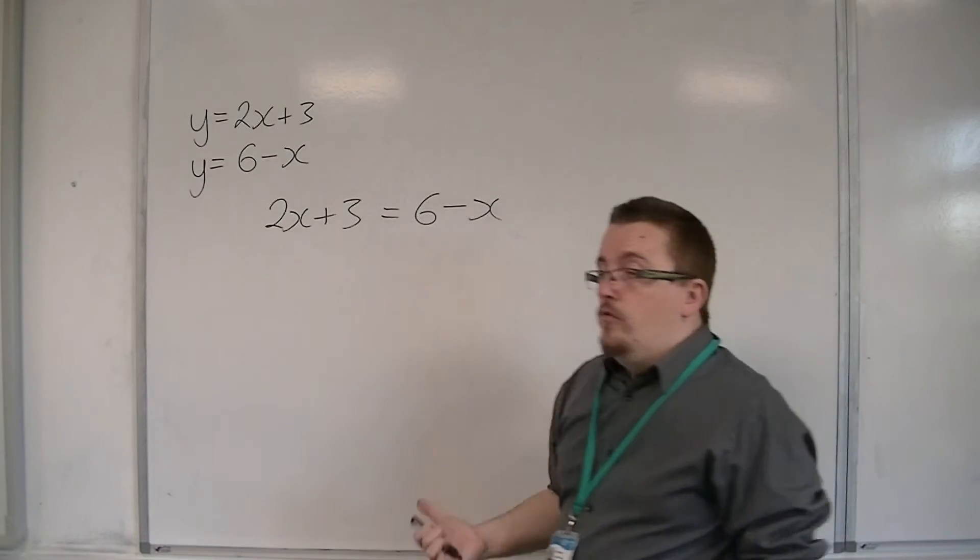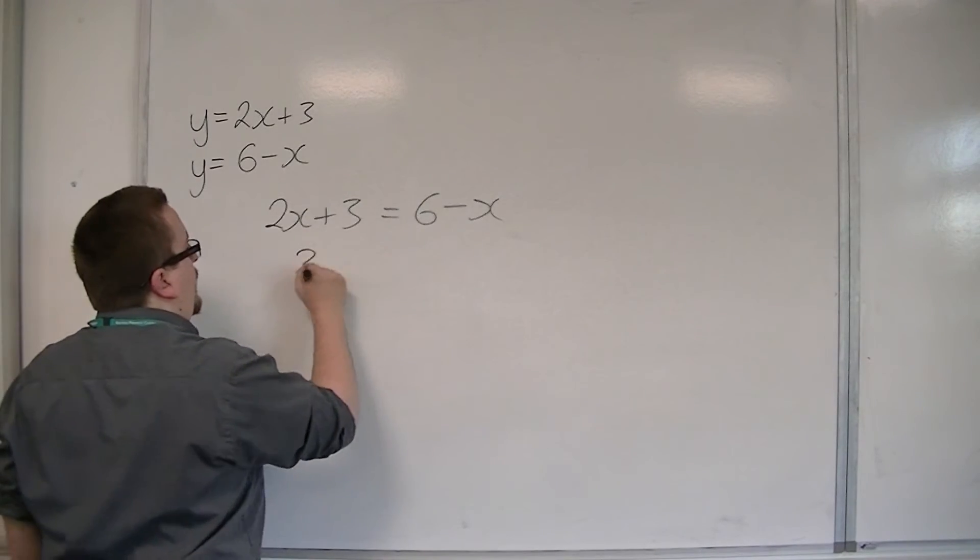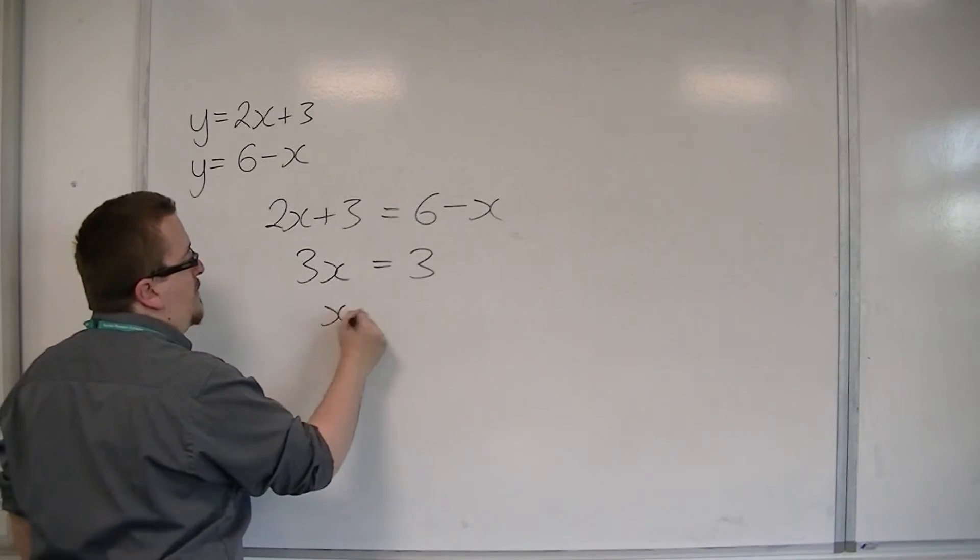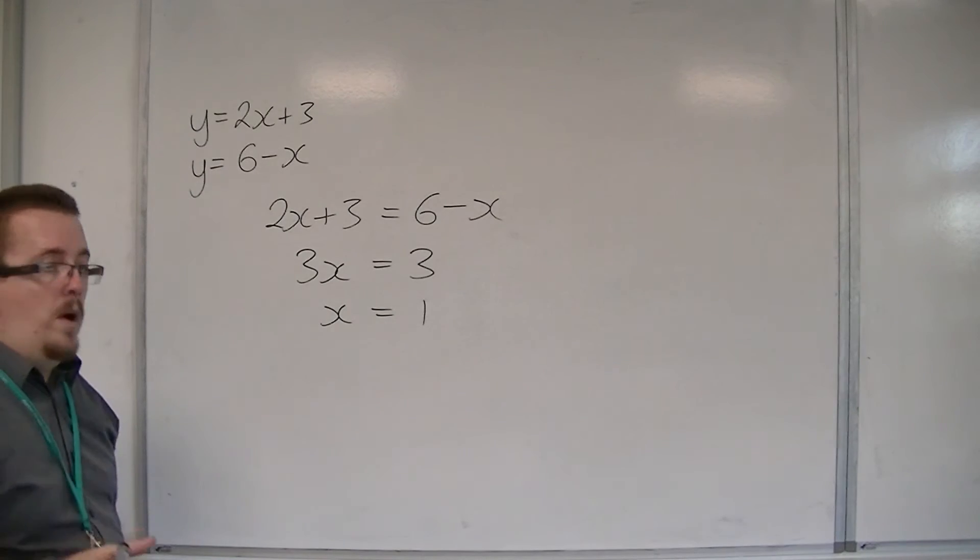You could then reorganize this, so add x to both sides, take 3 from both sides, and then divide both sides by 3. And so, x is equal to 1.